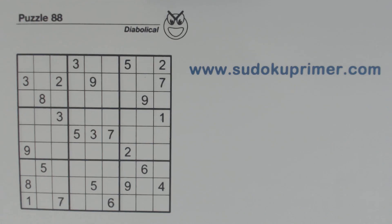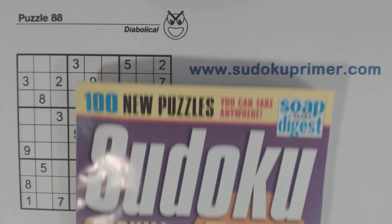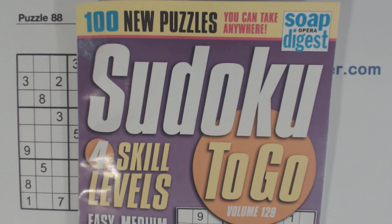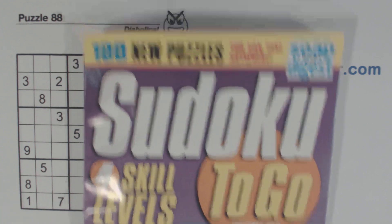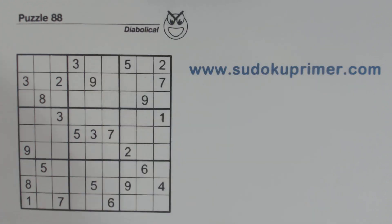This is puzzle number 88 from Sudoku2Go volume 129 by Soap Opera Digest. In this puzzle we're going to use the diagonal pattern to help make some good progress. I'm going to talk about the diagonal pattern, what it is, how it works, and how it can find a hidden corner pattern also.